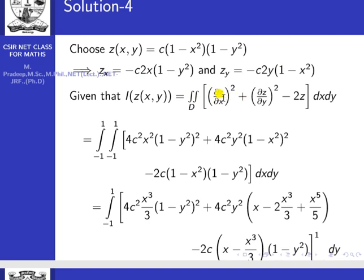Substituting into the functional: (∂z/∂x)² = 4c²x²(1 − y²)², (∂z/∂y)² = 4c²y²(1 − x²)², and −2z = −2c(1 − x²)(1 − y²). We integrate all these terms over the square with x from −1 to 1 and y from −1 to 1.